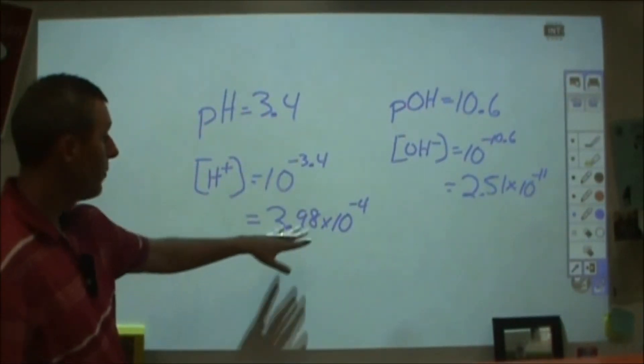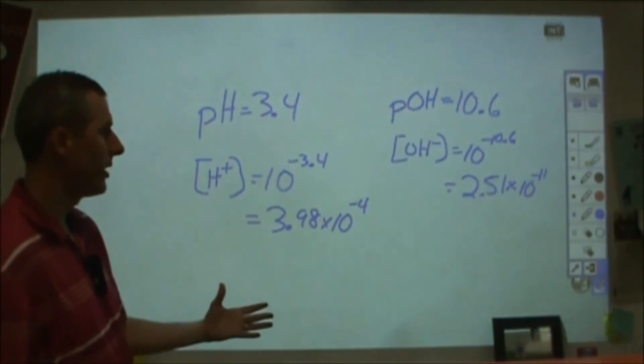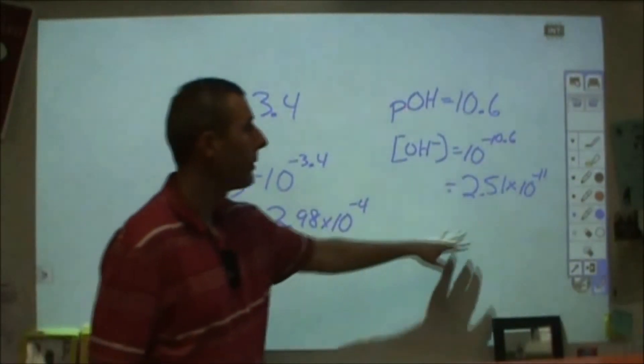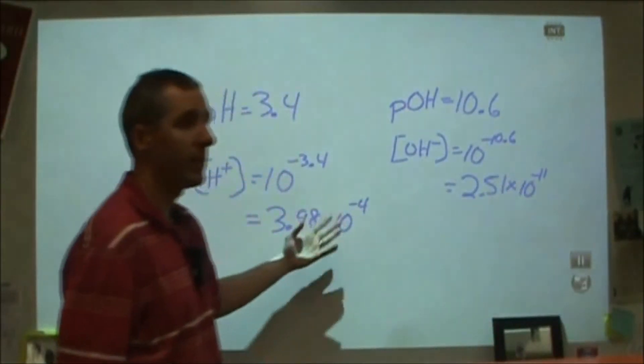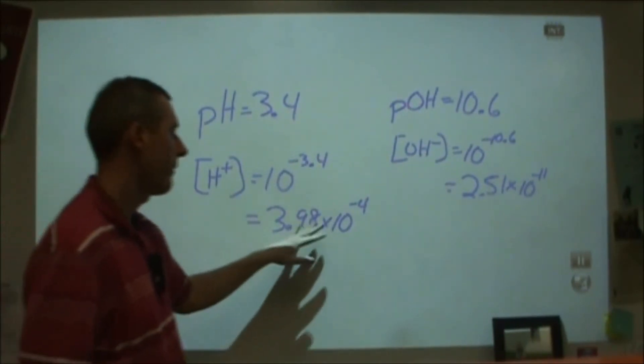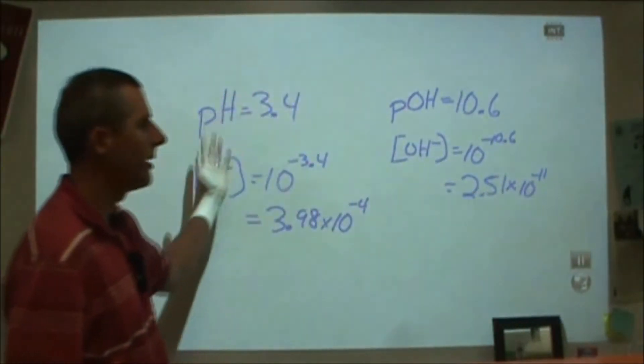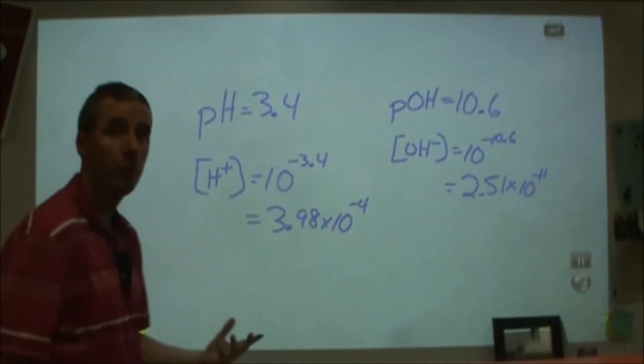As a final check, if you multiply this by this, they should multiply to be 10 to the minus 14th. We can see we're about 4, we're about 2.5. Multiply that, you're going to get 10. 10 to the minus 4, 10 to the minus 11th is 10 to the minus 15th times 10 is 10 to the minus 14th. So that final check there we can do, but it's not necessary to complete the problem. That's how you would go through and do a pH calculation.